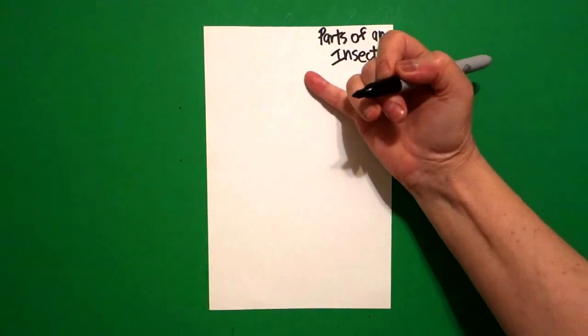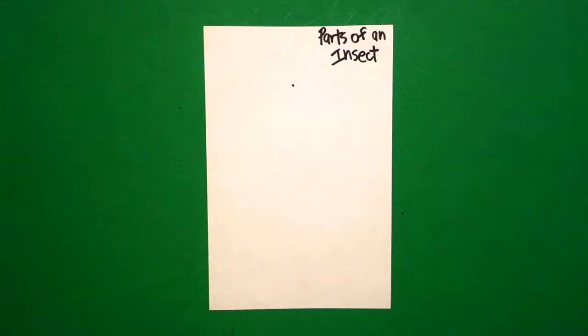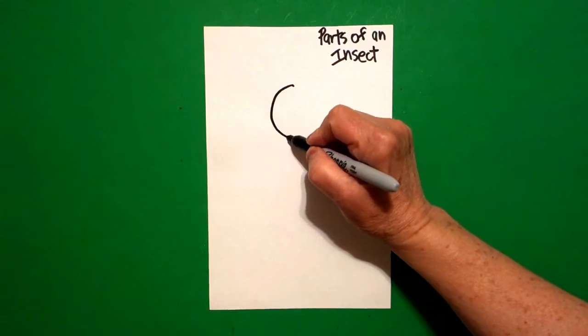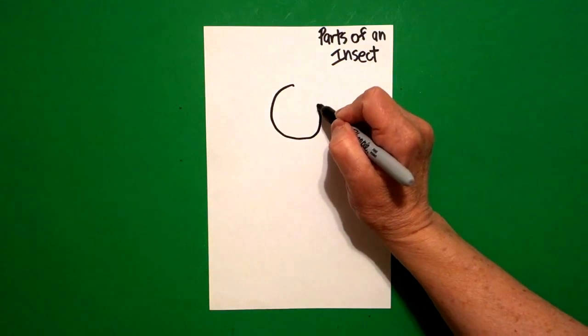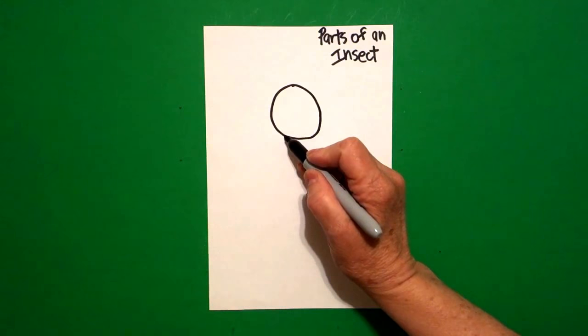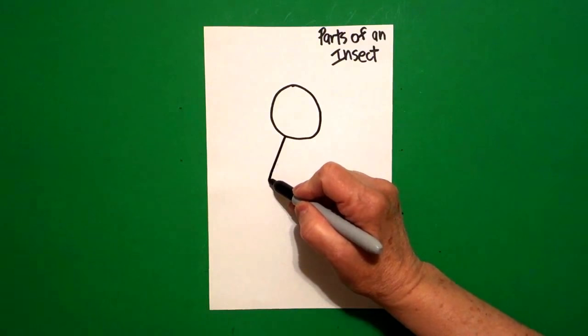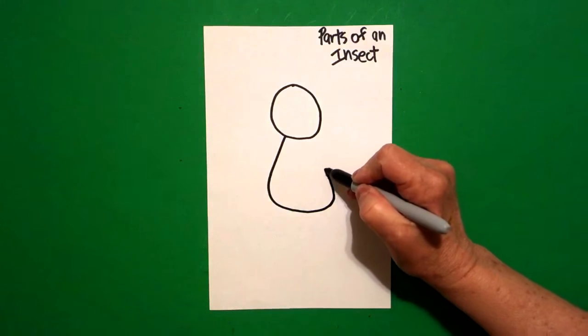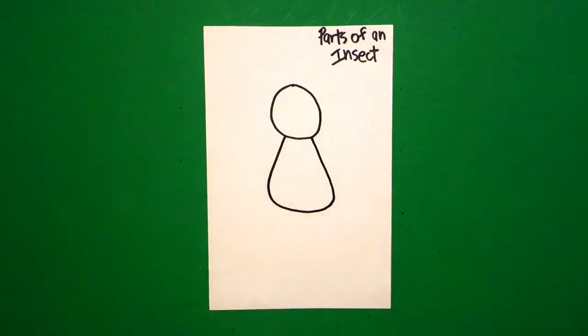I come right down underneath what I just wrote and let's put a dot. And from that dot I'm going to draw a curved line all the way around, up and connect. I come to the left-hand side, I'm going to draw a curved line down, curved line over, curved line up and connect.